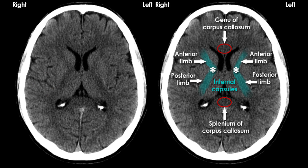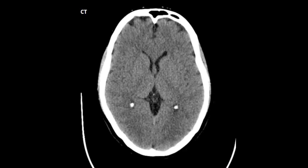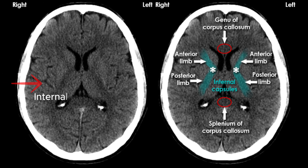This L-shaped structure here lying next to the lateral ventricles is the internal capsule. It comprises of anterior limb, genu, and the posterior limb. At this deep level of the brain, around the ventricles there are bundles of grey matter that form the Deep Brain Nuclei, and these nuclei lie adjacent to the internal capsule.